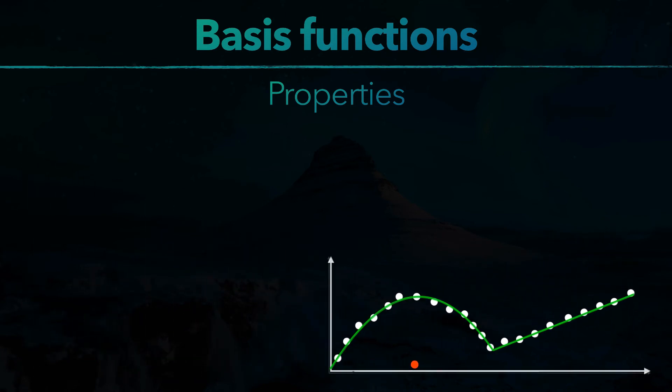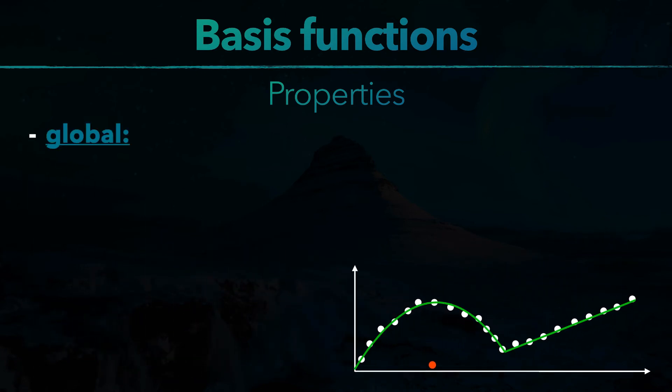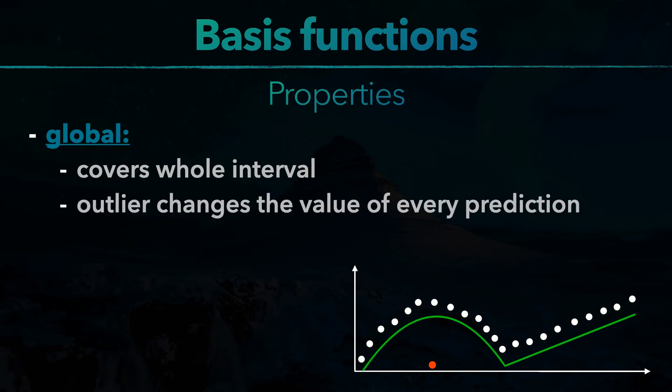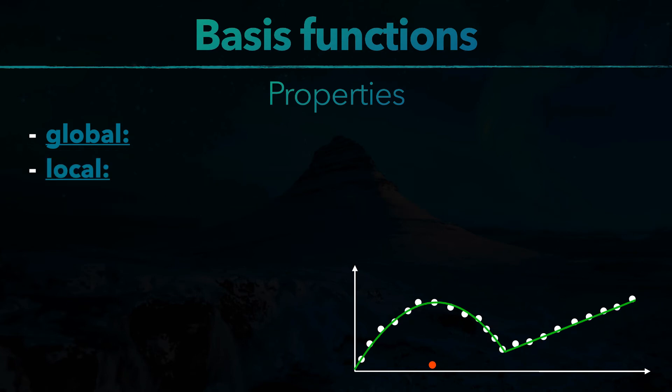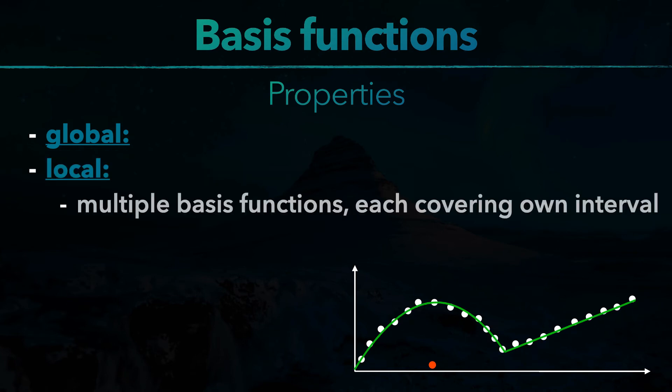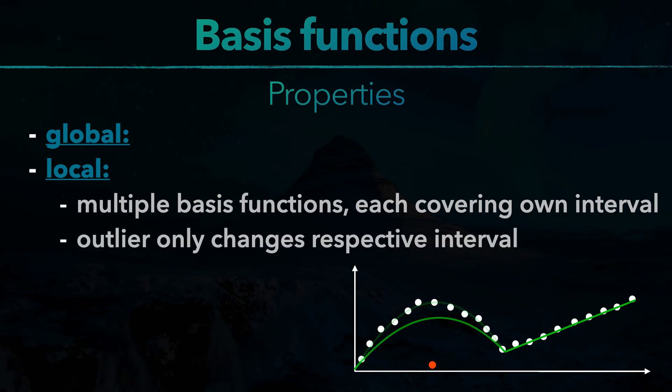If the basis function is global, that means it covers the whole interval, then the outlier changes the value of every prediction. If the basis function is local, that means there are multiple basis functions, and each one covers its own interval, then the outlier only changes the respective interval, but nothing else.